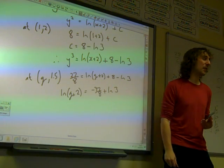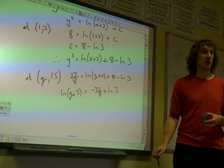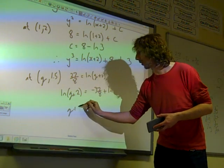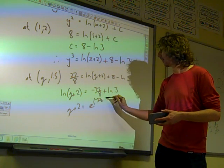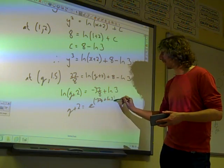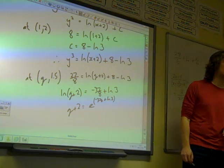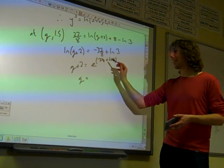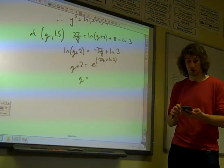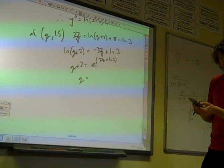Plus ln 3. Eventually we want to know what q is. So this is q+2 equals e to the (minus 37/8 plus ln 3). So q is whatever that is, take away 2.